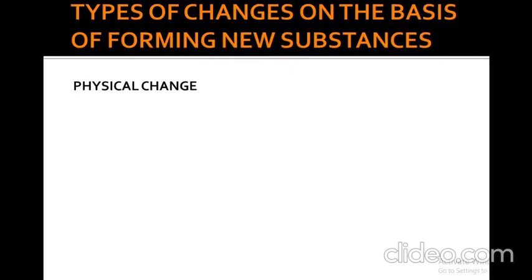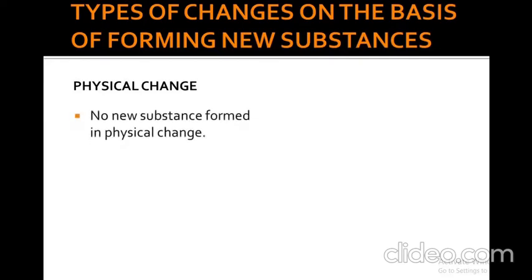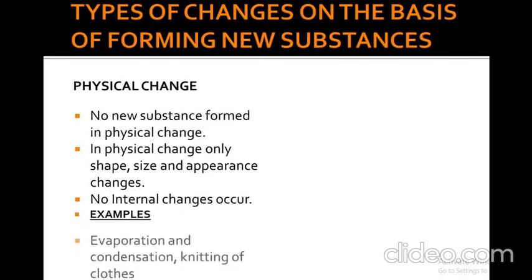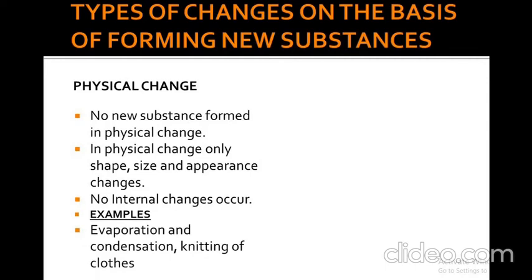Now, the types of changes on the basis of forming new substances. We have two types: physical change and chemical change. In a physical change, no new substance is formed. Only the size, shape, and appearance change — you can change the size or shape of an object, but not its chemical properties. No internal changes occur. For example, evaporation, condensation, and knitting of clothes.